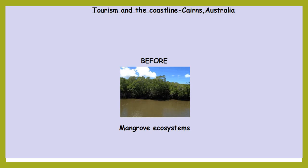The problem is, before Cairns was there — if you think about the image at the very start — these areas where boats come in to dock for tourists would have been natural habitats before the tourism industry and cities like Cairns were built. One of the most common natural habitats in tropical coastal regions, like northeastern Australia, is a mangrove ecosystem.